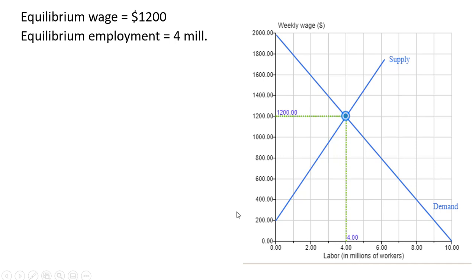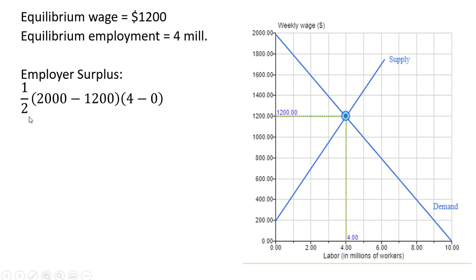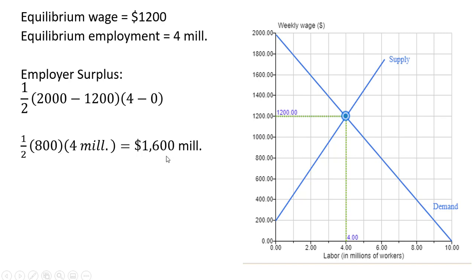Now let's calculate employer surplus. Employer surplus is the difference between the value of the marginal product of labor — given by the height of the demand curve — and the wage that firms are paying, which is $1,200 a week. This gives us a triangle between the demand curve and the wage up to the last worker hired. The area of a triangle is one-half base times height: the height is $2,000 minus $1,200, and the base is 4 minus 0, or 4. Simplifying, we get $1,600 million, or $1.6 billion of employer surplus.